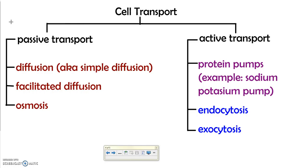There are a lot of specific examples, but we're going to step back and look at some of the most common and most important forms. We'll start with passive transport. There are three forms of passive transport: diffusion, facilitated diffusion, and osmosis.